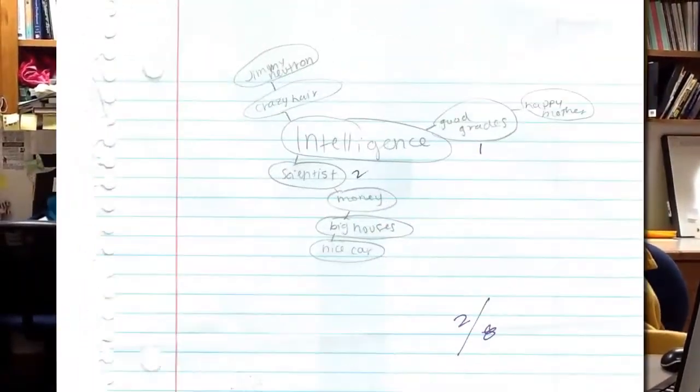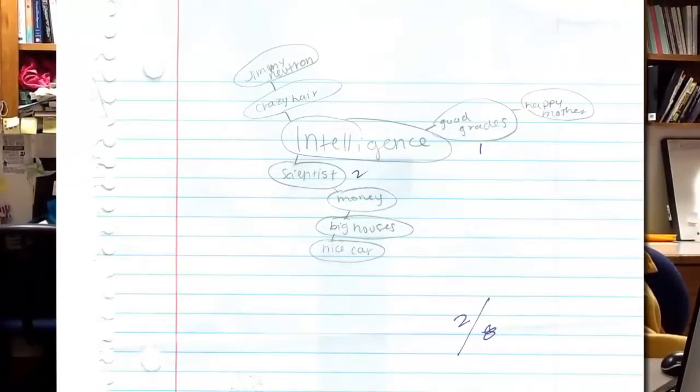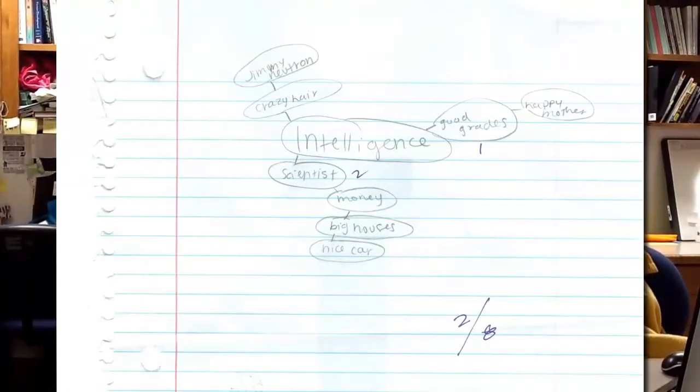For instance, I had my class the other day — we were beginning to study intelligence — and so I had them place the word intelligence in the center of a piece of paper, and then gave them 60 seconds to come up with as many ideas as they could think of when it comes to intelligence.